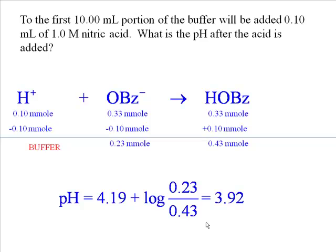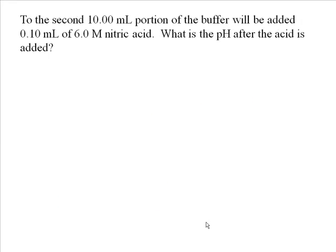We added acid to this buffer, so it's reasonable to expect the pH to go down — and indeed it has, from 4.19 to 3.92. Now let's move on to the next 10-milliliter portion, where we're going to add the same volume but a much more concentrated nitric acid solution — 6 molar instead of 1 molar.